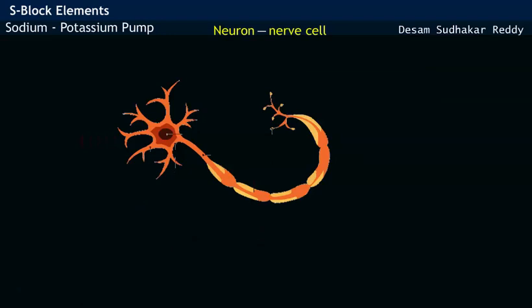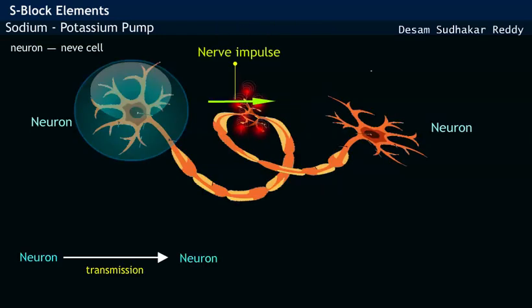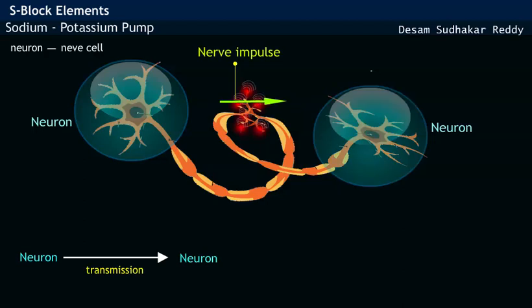A neuron or nerve cell consists of dendrites which receive nerve signals. A nerve impulse received may be transmitted from one neuron to another neuron only when there is a potential difference.